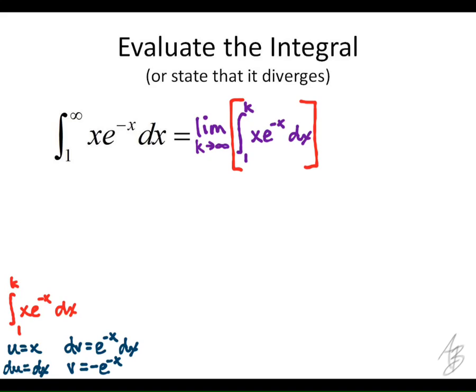So then our integration by parts formula tells us that this integral here, the antiderivative of this is going to be u times v minus the integral of v du.